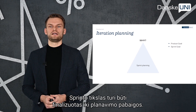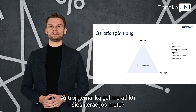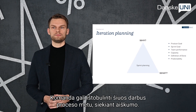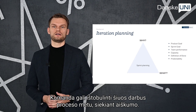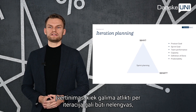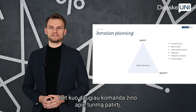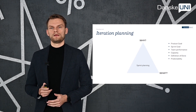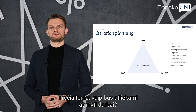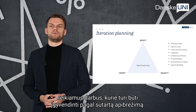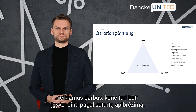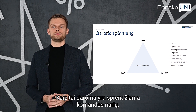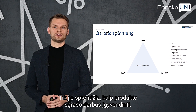The whole team collaborates to define a sprint goal that communicates why the sprint is valuable to stakeholders. The sprint goal must be finalized prior to the end of sprint planning. The second topic is: what can be done in this iteration? Through discussion with the product owner, team members select items from the product backlog to include in the current sprint and may refine these items during the process. Selecting how much can be completed within a sprint may be challenging, but the more team members know about their past performance, upcoming capacity, and definition of done, the more confident they will be in the sprint forecast. The third topic is: how will the chosen work get done? For each selected product backlog item, the team plans work necessary to create an increment that meets the definition of done.